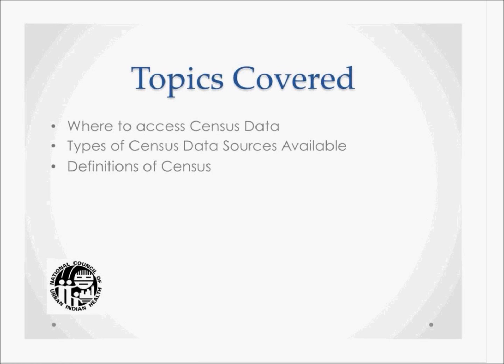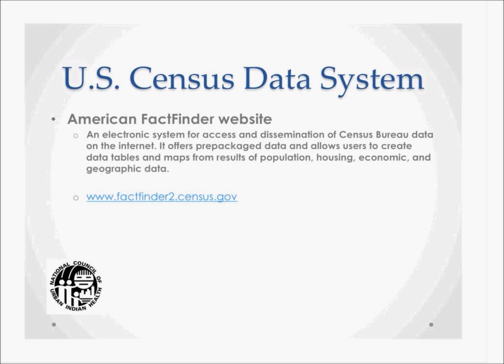Hello. My name is Dr. Kimberly Fowler from the National Council of Urban Indian Health here in Washington, D.C. I will be covering the topics of where to access census data, types of census data sources available, and definitions of census. The data system that the Census Bureau uses is called the American FactFinder — an electronic system for accessing and disseminating data on the Internet. It offers prepackaged data and allows users to create data tables and maps from results of population, housing, economic, and geographical data.